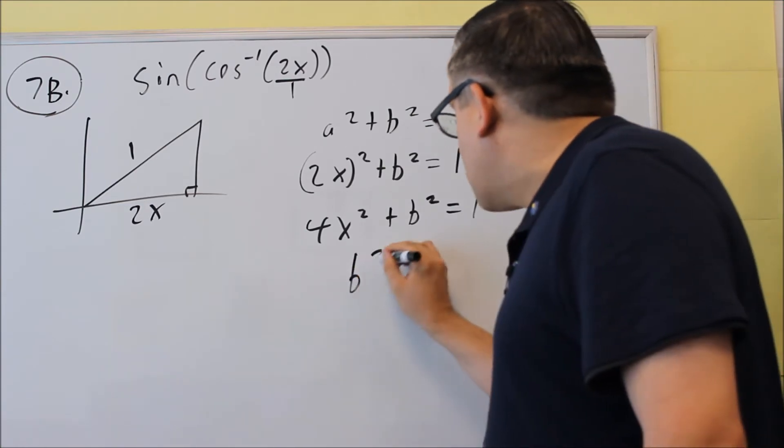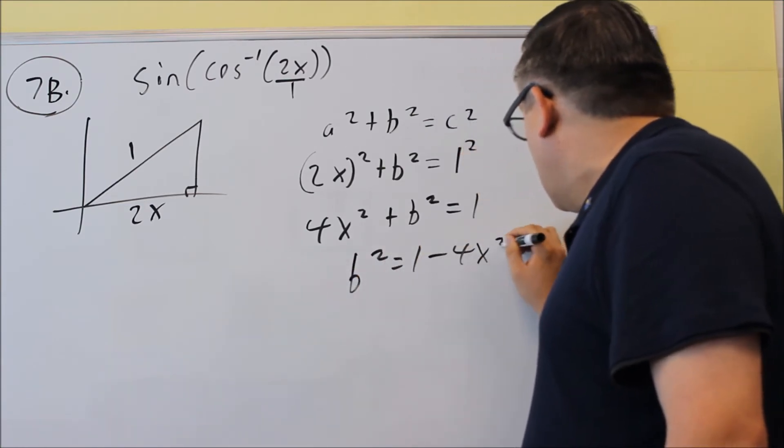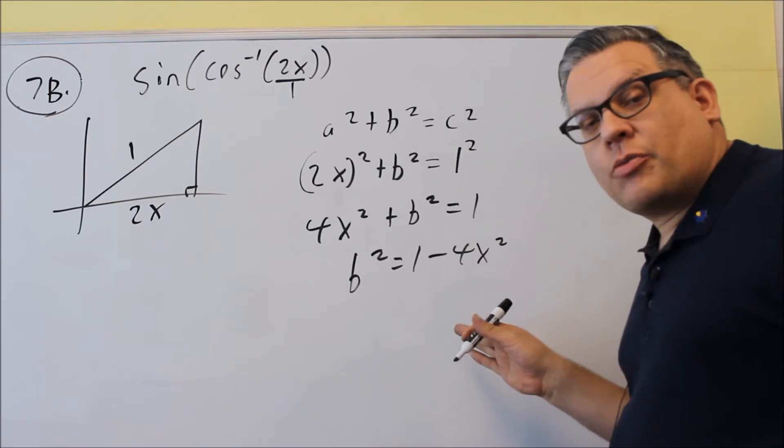We need to solve for b squared. That's 1 minus 4x squared. You're going to take the square root of both sides.